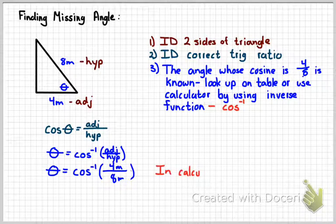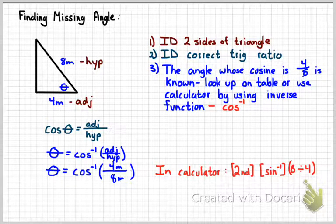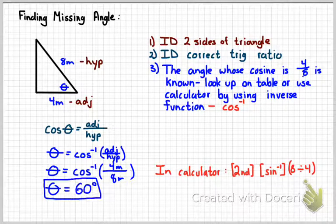In your calculator, you're going to punch in second, or shift depending on your calculator brand. Cosine to the minus 1, and then plug in 4 over 8. You probably want to enclose that in parentheses, and then press enter, and that should return an angle of 60 degrees.